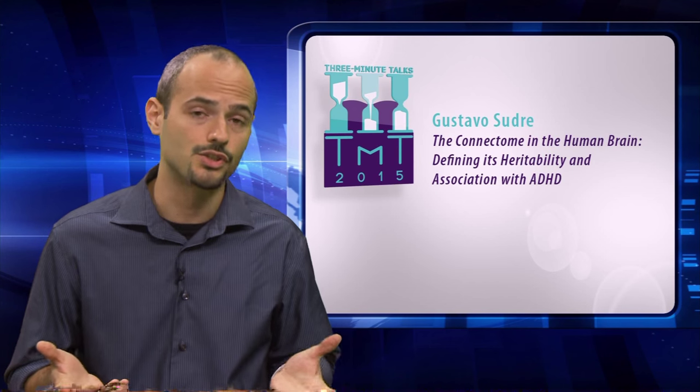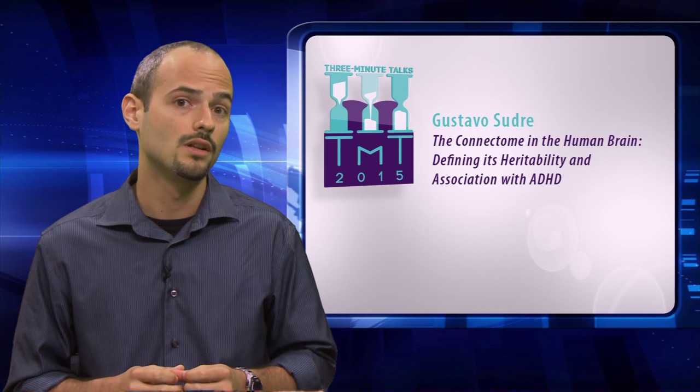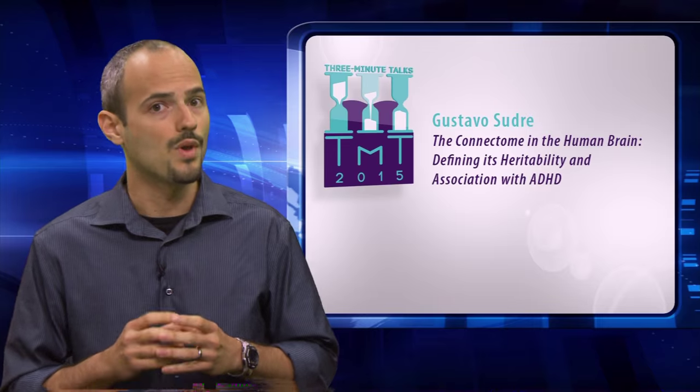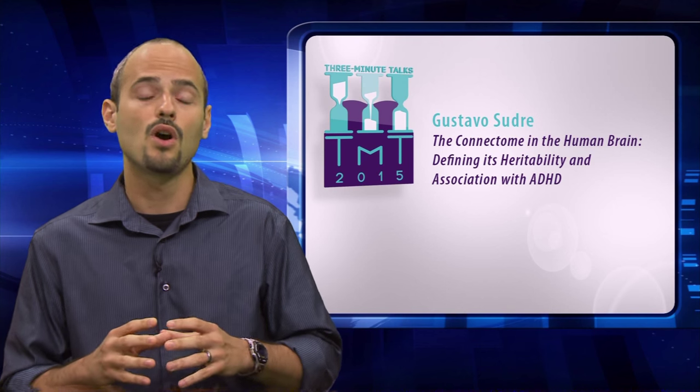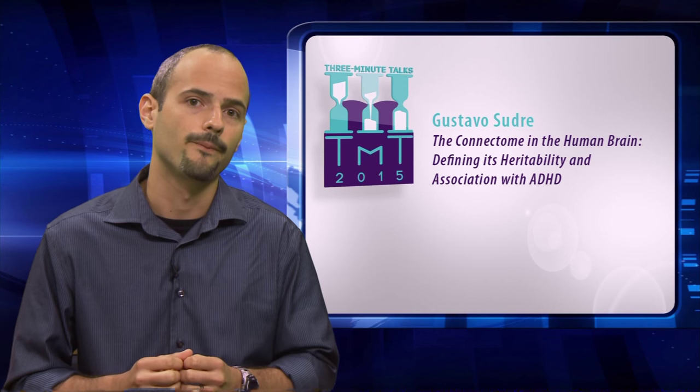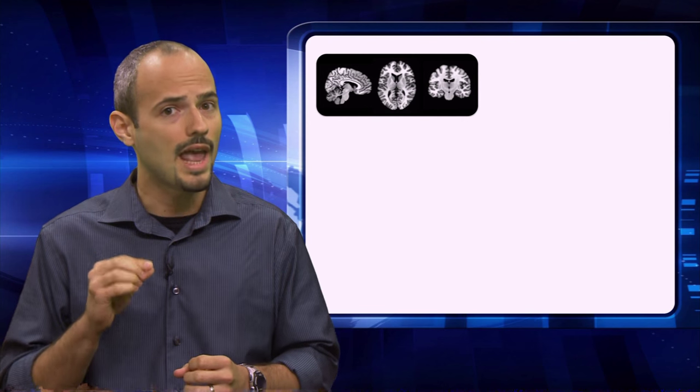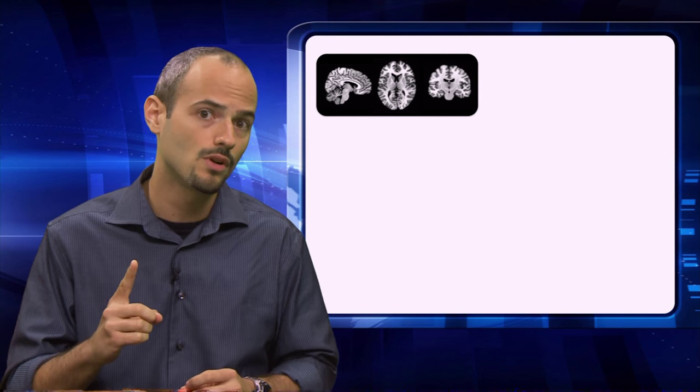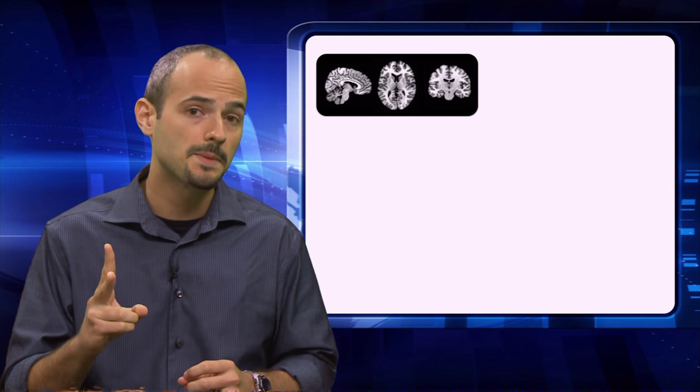But what kind of markers are we looking for? Well, we know that ADHD is highly heritable. We also know that ADHD involves different systems in the brain. So here we ask what connections in the brain are both heritable and associated with symptoms of ADHD.